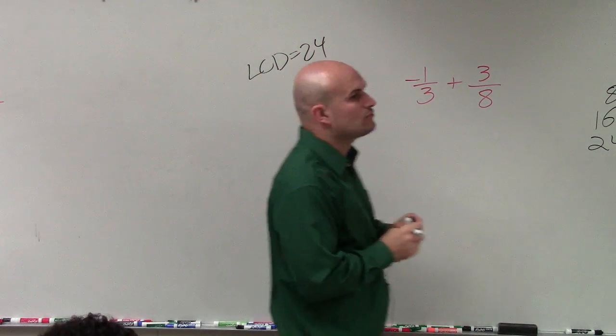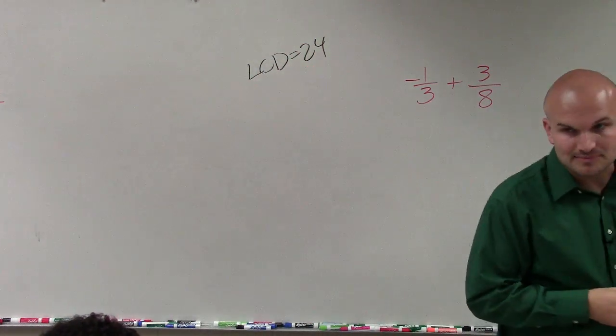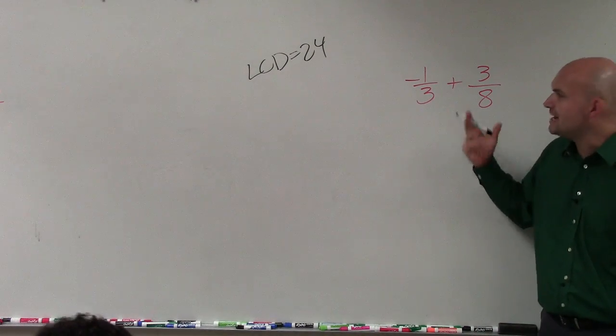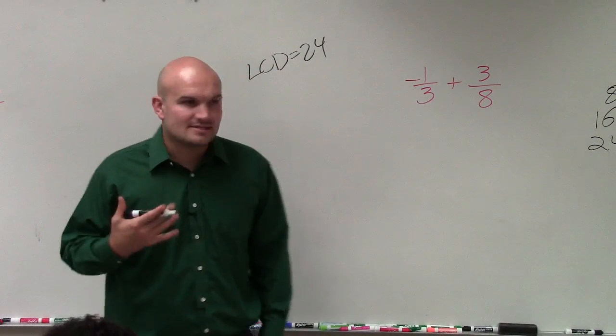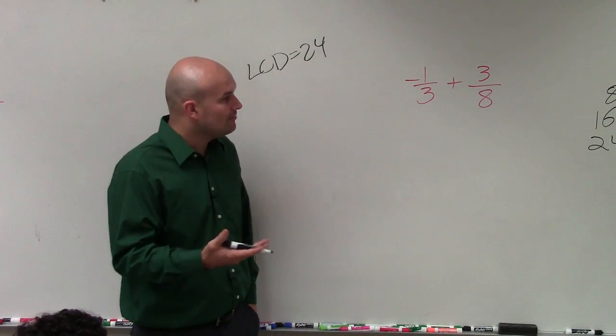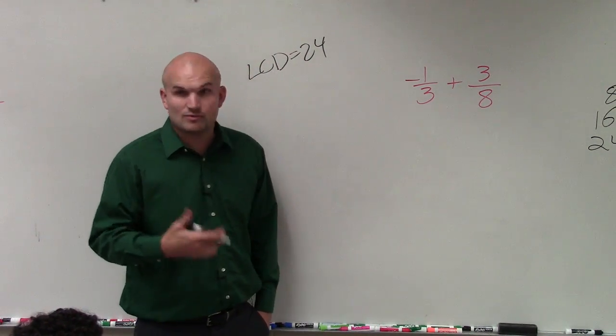And what I'd like you guys to do is always write that down so you can remember it. And basically, when we have an LCD of 24, what we want to be able to do is say, alright, what do I need to multiply both of my denominators by to get to 24?